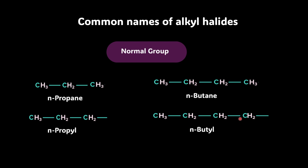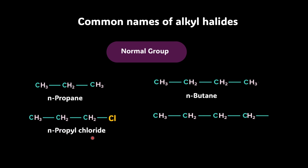With 4 carbons, we call it N-butyl. The common names of alkyl halides are derived by naming the alkyl group, followed by the name of the halide. For example, to a 3-carbon straight alkyl chain with a chlorine attached, the name shall be N-propyl chloride. Similarly, with 4 carbons and a bromo group, the name shall be N-butyl bromide.